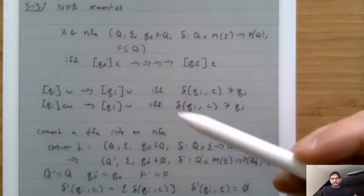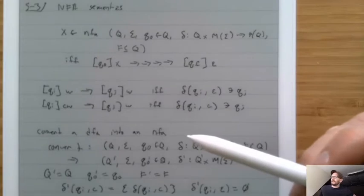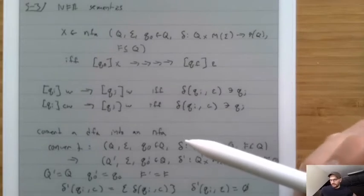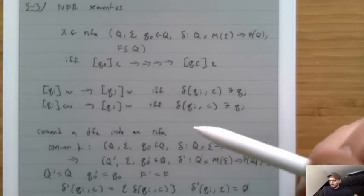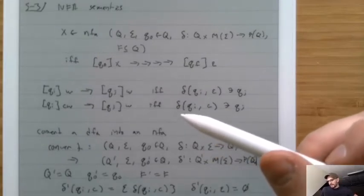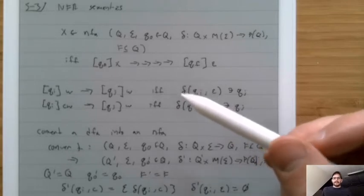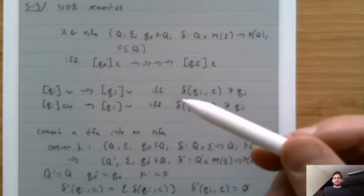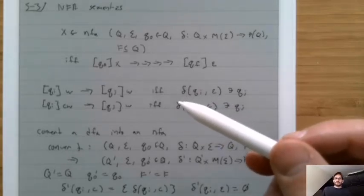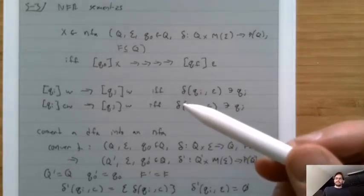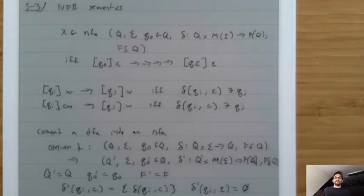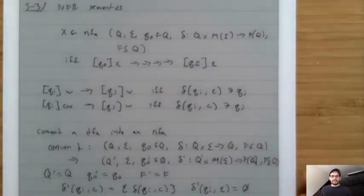The NFA semantics is useful because it helps us know whether or not a particular trace is valid and tells us the rules for building traces. Let's try to operationalize those into functions.